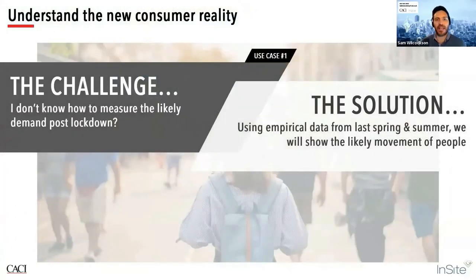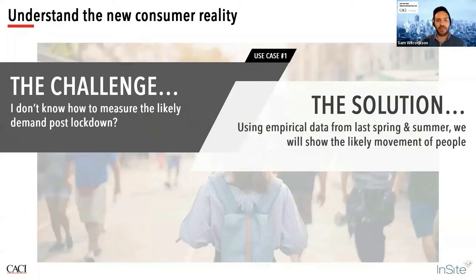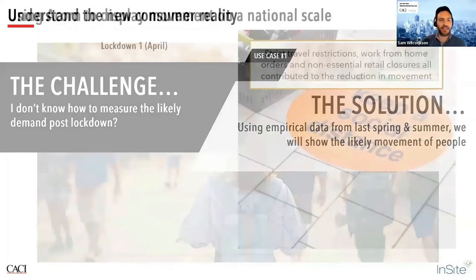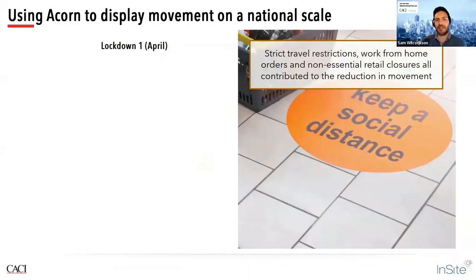A key issue is how we can measure what's going on as restrictions get lifted. It's a very dynamic situation, so we've drawn a line in the sand to measure different levels of movement. To understand the likely demand, we're going to compare movement levels from the first lockdown through to the height of summer and the Eat Out to Help Out scheme. The movement data is gathered from mobile phone apps. We'll take a look at this from two angles: by appending the movement data to different demographic groups using ACORN, and by applying it to different types of destinations using retail footprint.